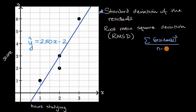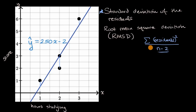We can talk in future videos, or a more advanced statistics class, about why you divide by two. It's related to the idea that what we're calculating here is a statistic, and we're trying to estimate a true parameter as best as possible, and n minus two does the trick. To calculate the root mean square deviation, we then take the square root of this.